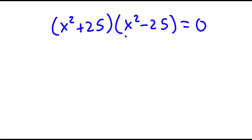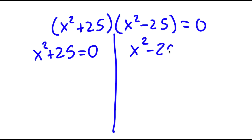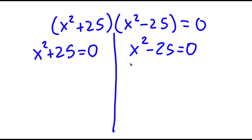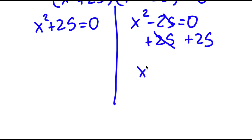So now this is actually going to give me two equations. I have x squared plus 25 is equal to 0, and I have x squared minus 25 is equal to 0. So let's first start by solving x squared minus 25 equals 0. To solve this, I'm going to add 25 on both sides, so now I have x squared is equal to 25.